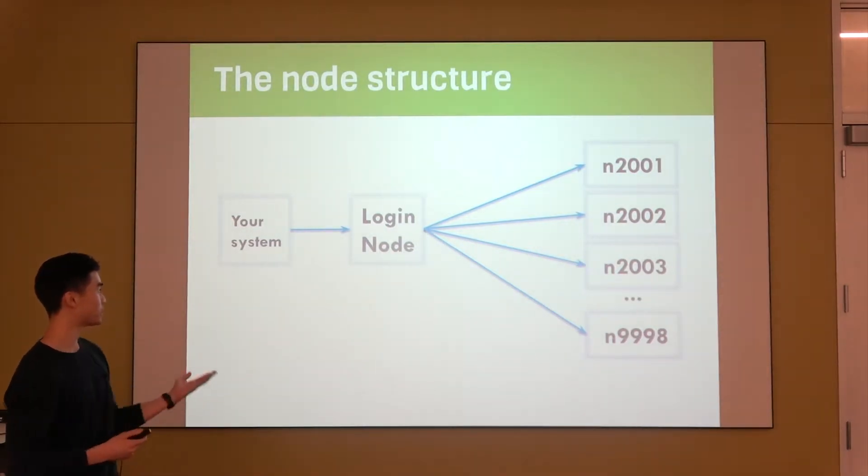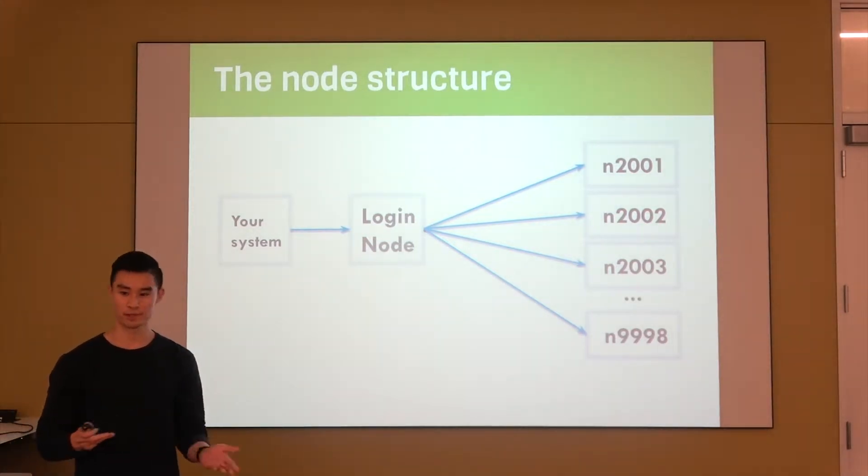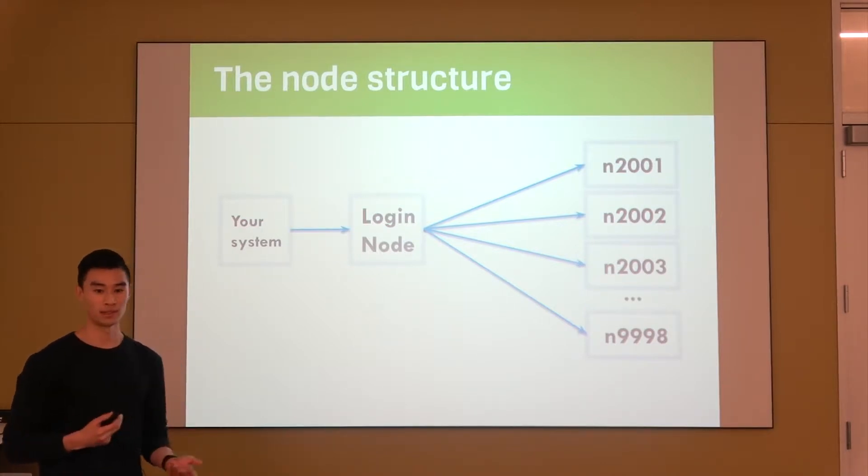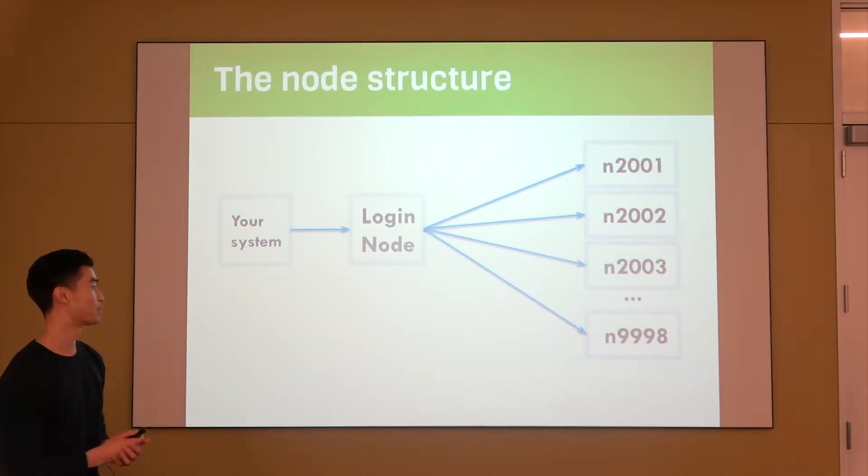If you have a Hoffman 2 account, which you get through your PI, you will SSH or log into what's called a login node. This is your first point of entry into the Hoffman 2 system, and this is where you'll do all your basic tasks like submitting jobs or doing some basic file editing and file manipulation.